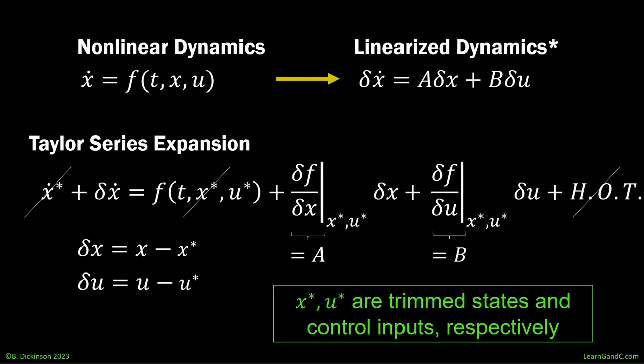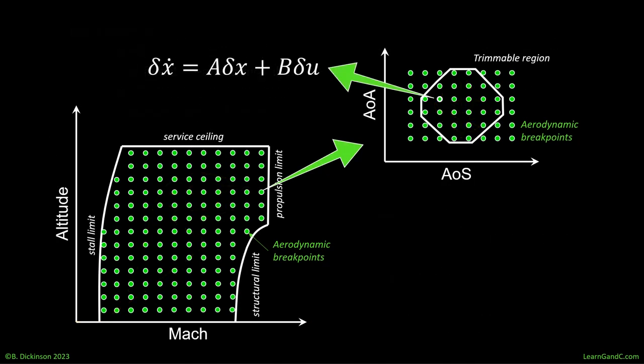How do the linearized dynamics fit within the trimmable envelope? To be clear, each flight condition pertains to a different trim condition, and therefore different linearized dynamics. Now, do we need to trim, linearize, and design a controller at all breakpoints? Not necessarily. If the linearized dynamics are similar over a neighborhood of breakpoints, a common controller based on a single linearized model in that neighborhood may be sufficient.